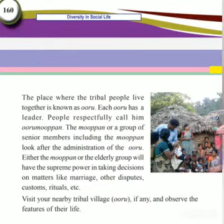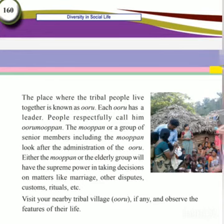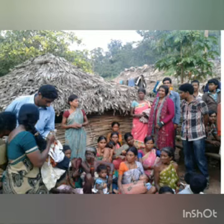The place where tribal people live together is known as an 'uru.' Each uru has a leader, respectfully called the 'uru mupan.' The mupan, or a group of senior members including the mupan, looks after the administration of the uru. Either the mupan or the elderly group has the supreme power in taking decisions on matters like marriage, disputes, customs, and rituals.